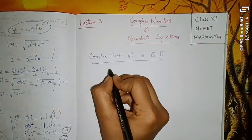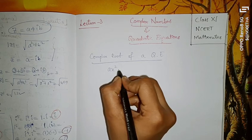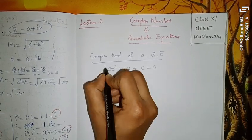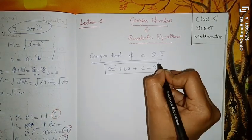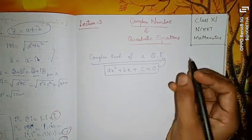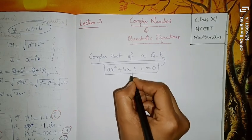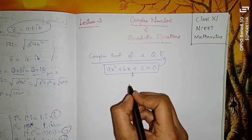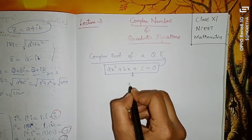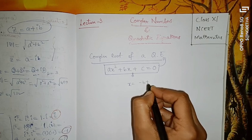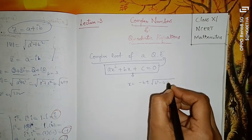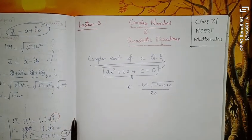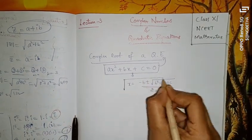Quadratic equations are very easy. The standard form is ax² + bx + c = 0. You have already studied finding roots in 10th standard using the formula: x = (−b ± √(b² − 4ac)) / 2a. You have already learnt this formula in earlier classes.